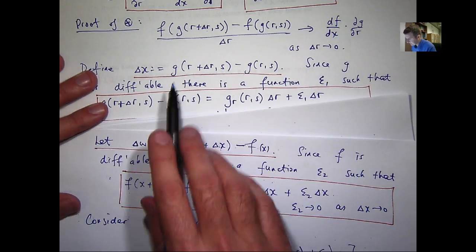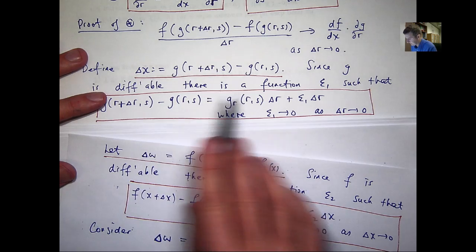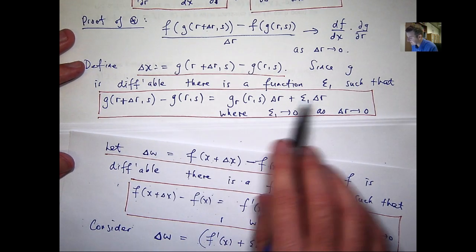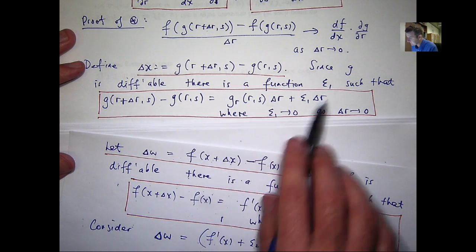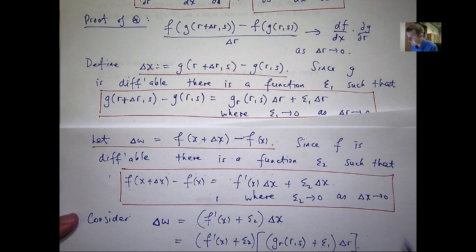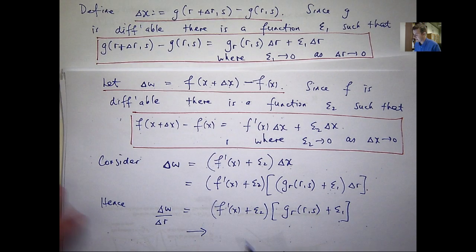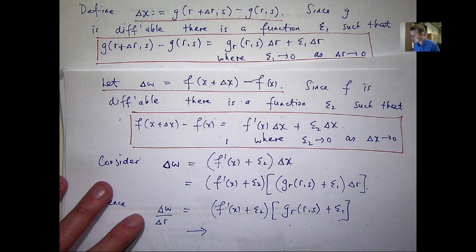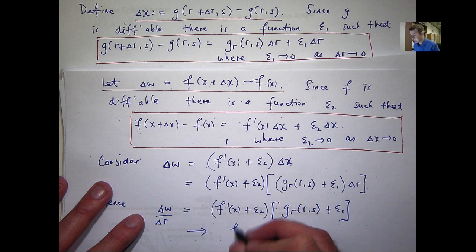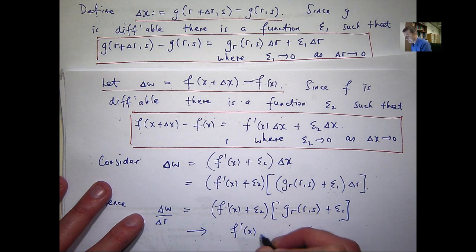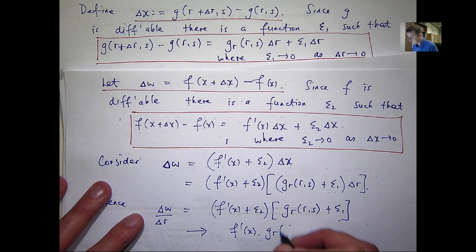What about this term? Well, you can see that from here, that if delta r goes to zero, this right-hand side goes to zero. So, this has got to go to zero. So basically, delta x also has to go to zero. And we already know what happens to epsilon 2 as delta x goes to zero, epsilon sub 2 goes to zero. So, this term also goes to zero.